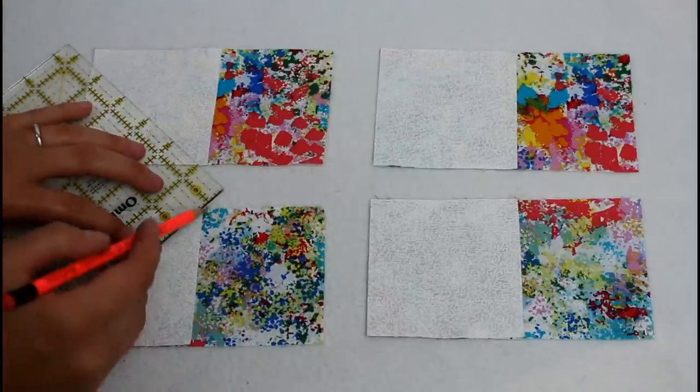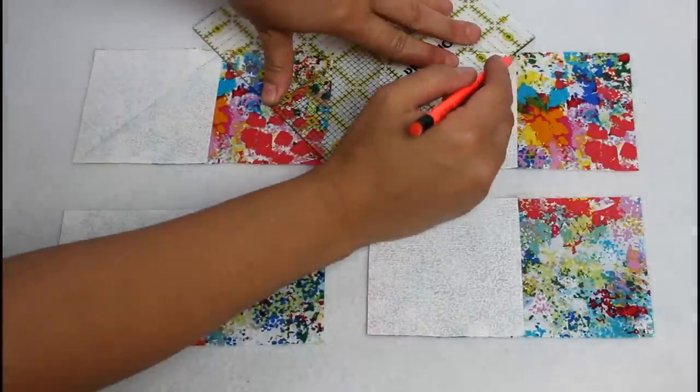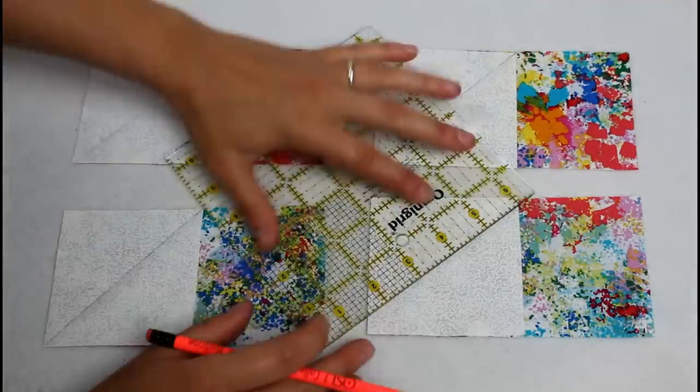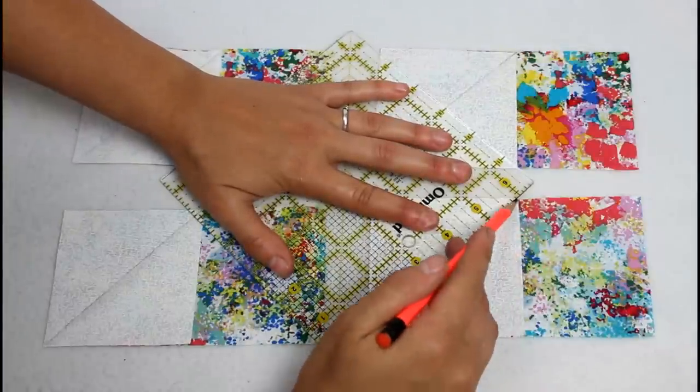Use a ruler and marking tool. Mine is just a pencil to mark from the lower left corner to the upper right corner. Make sure the marked line goes exactly to the point of each corner.